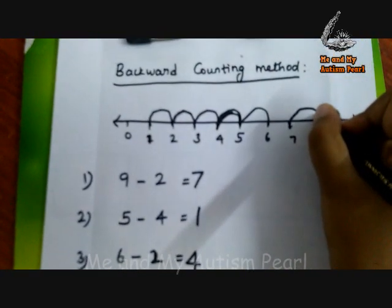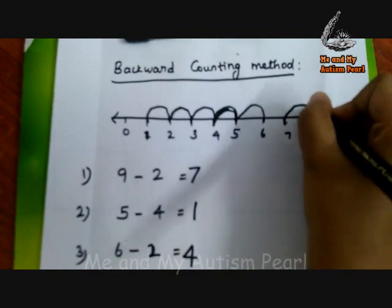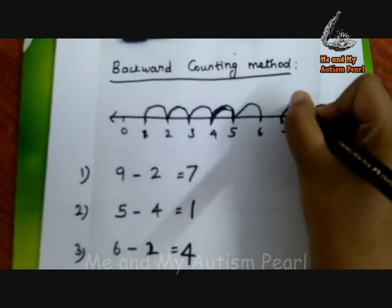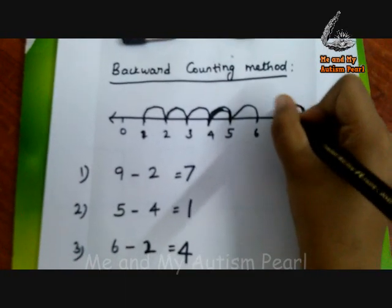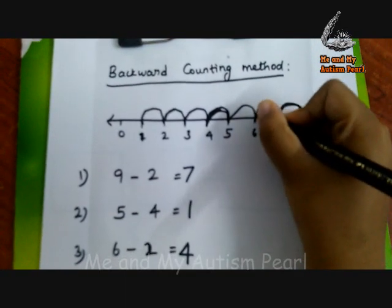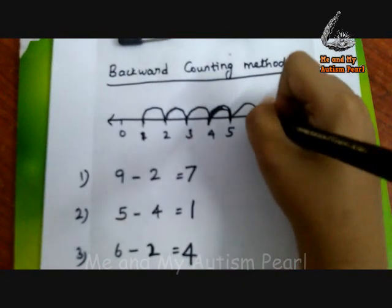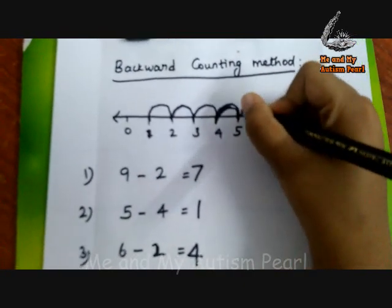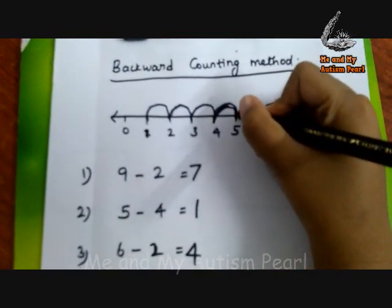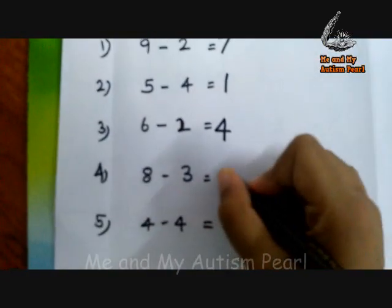Eight minus three. Eight minus one is equal to seven. Eight minus two is equal to six. Eight minus three is equal to five. Five.